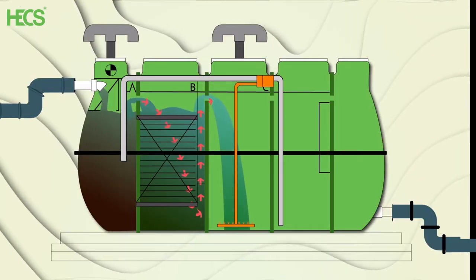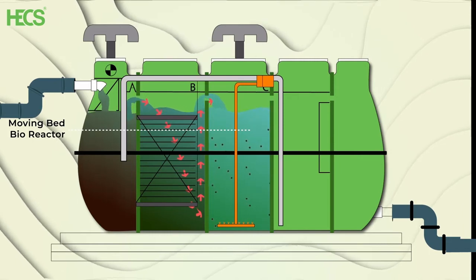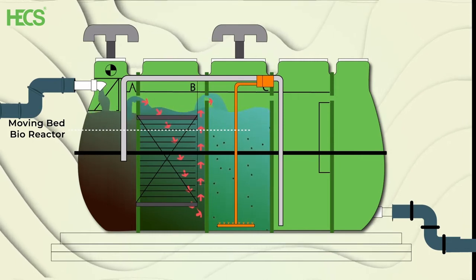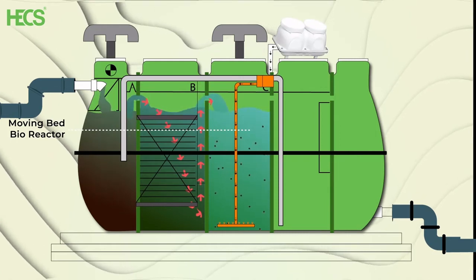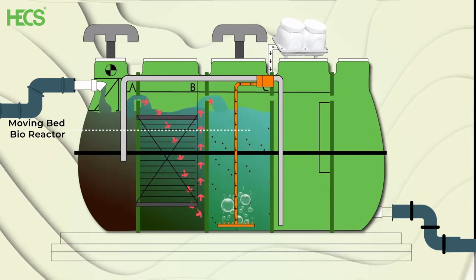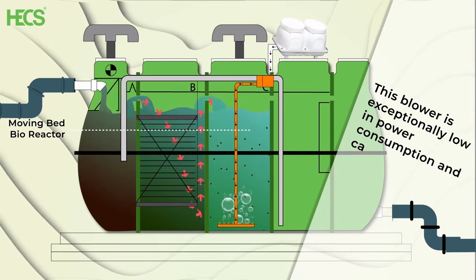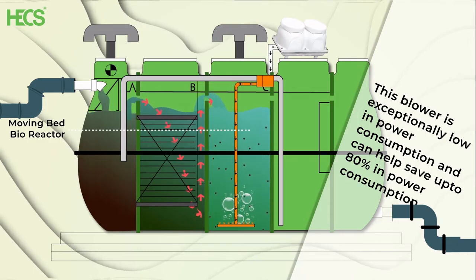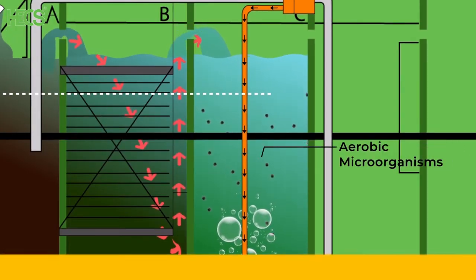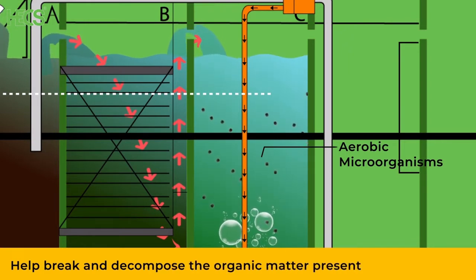The partly treated sewage then flows into the MBBR or moving bed bioreactor, which consists of MBBR media. Continuous aeration is provided to this chamber through a magnetic diaphragm blower. This blower is exceptionally low in power consumption and can help save up to 80% in power consumption. The aerobic microorganisms present help break and decompose the organic matter present in the sewage.